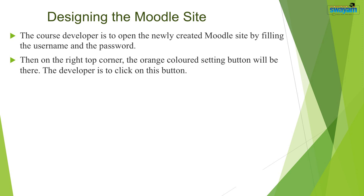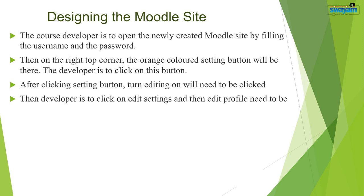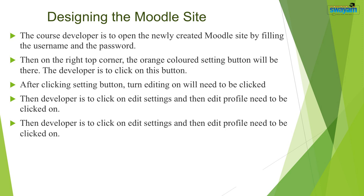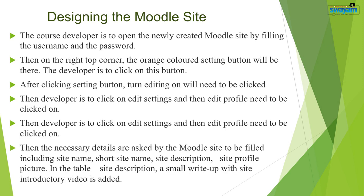On the top right corner of the Moodle site, there is an orange colored button in the form of an inverted triangle. Click on this button, then click 'Turn editing on'. Then click on 'Edit settings' and then 'Edit profile'. After this, the necessary details are asked by the Moodle site to be filled in, including site name, short site name, and site description.